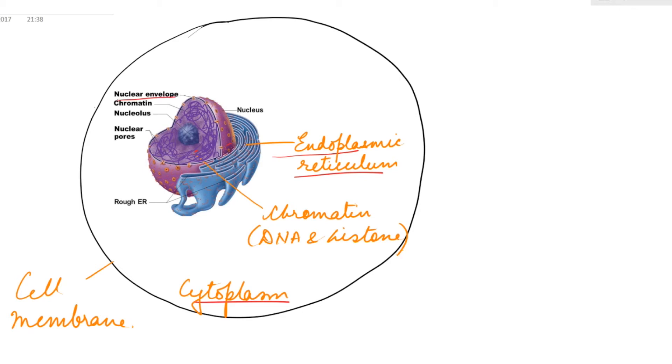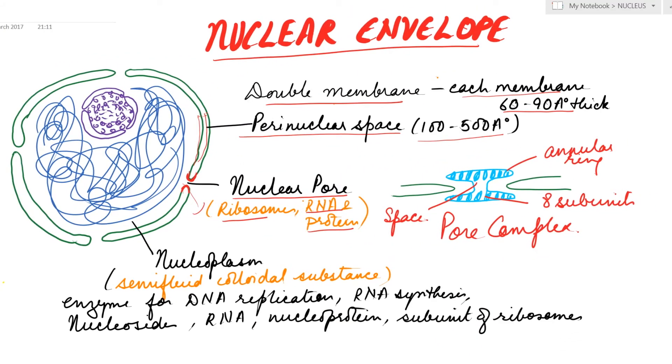Nucleoplasm is a semi-fluid colloidal substance. It is the region where DNA replication and RNA synthesis occurs, so it has enzymes for DNA replication and RNA synthesis. Besides this, nucleosides, RNA, nucleoprotein subunits of ribosome, and chromatin reticulum are present.